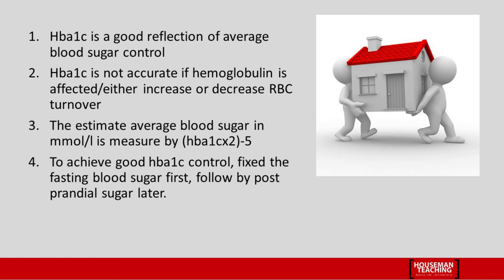The take-home message: HbA1c is a good reflection of a patient's blood sugar control. HbA1c is not accurate if hemoglobin turnover is affected — either decreased or increased red blood cell turnover. The average blood sugar in millimoles per liter is calculated by HbA1c × 2 − 5. To achieve good HbA1c control, fix the fasting blood sugar first, followed by the post-prandial sugar. Hope you enjoyed this video.